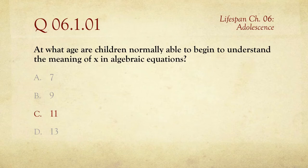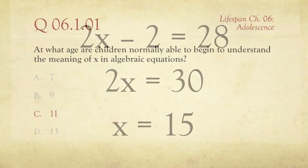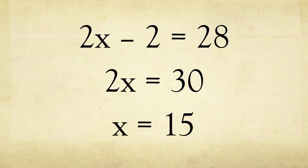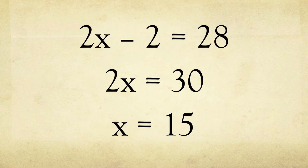So it's about the time they're going into 5th or 6th grade. Here's our little equation: 2X minus 2 equals 28. Move the 2 over — 2X equals 30 — divide both sides by 2, and you get X equals 15. So that's using X as an abstract concept, and that's one of the things about Piaget's progress in formal operations: the ability to deal with abstract entities.